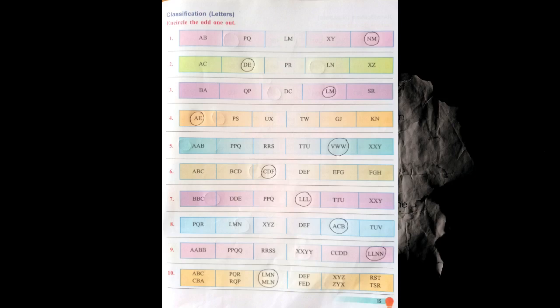Question number three: BA, QP, DC, SR and LM. All of the others are in reverse sequential form — B after A, Q after P, D after C, S after R. But LM is in regular forward form, where L comes before M, which makes LM the odd one.